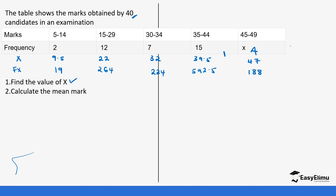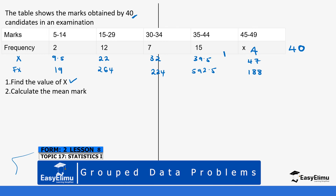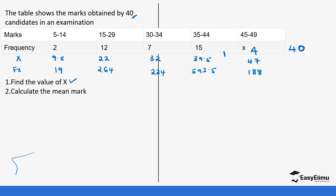The sum of frequencies is 40, as we already know. The sum of fx is 19 plus 264 plus 224 plus 592.5 plus 188, which gives 1287.5. Using the formula, the mean is sum of fx over sum of f: 1287.5 divided by 40 gives 32.1875. That's how you solve this question.